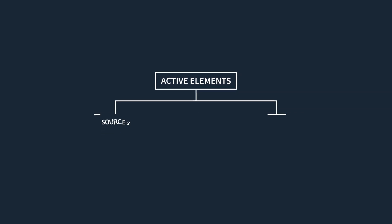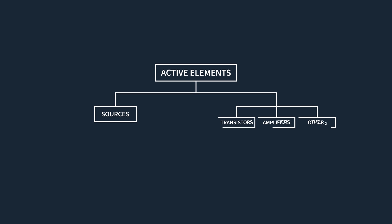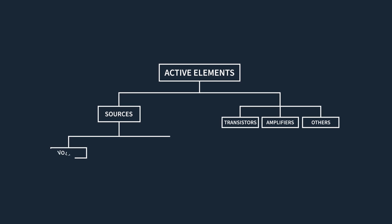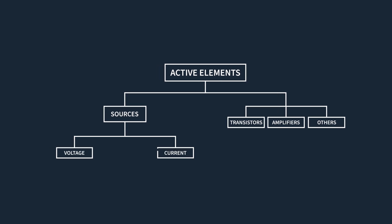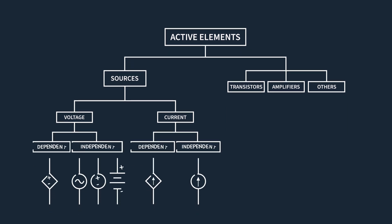They are very exciting, but a bit more complicated, so we'll leave them for later tutorials. In this tutorial, we will be discussing two essential active circuit components: voltage and current sources. These sources are classified as either dependent or independent.